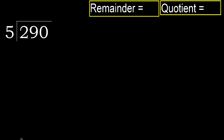290 divided by 5. 2 is less than 5, therefore move to the next digit. 29 is not less than 5, therefore we work with 29.